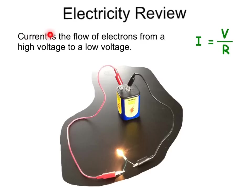Electricity Review. Recall that current is the flow of electrons due to a voltage difference, that is, from a high voltage to a low voltage, and that's according to Ohm's Law.